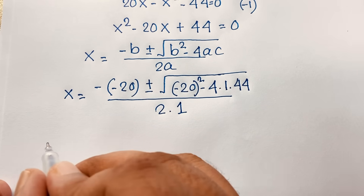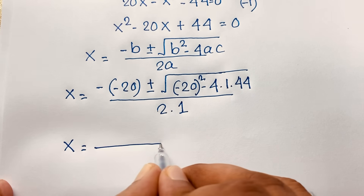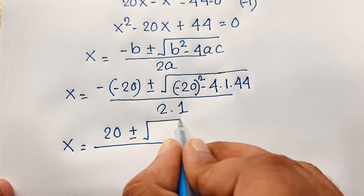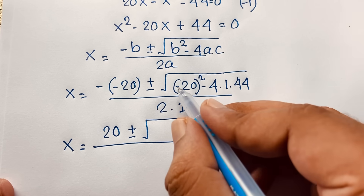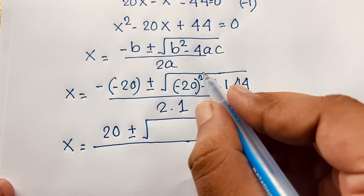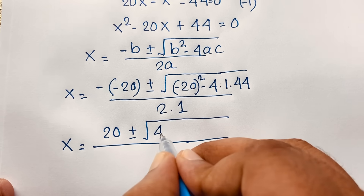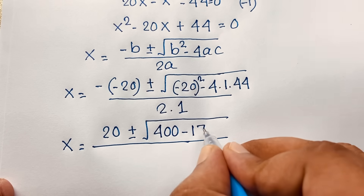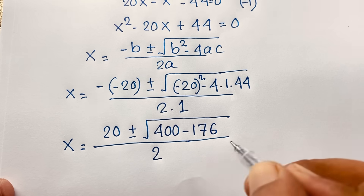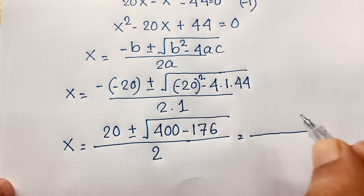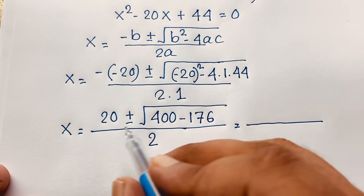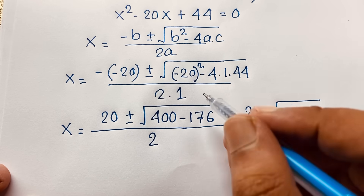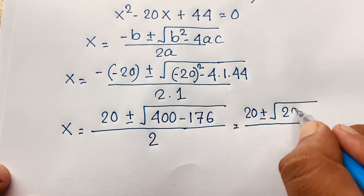So x equals 20 plus or minus square root of (20 squared minus 4 times 44), over 2. Since the exponent is even, 20 squared is always positive, giving 400. Then 4 times 44 is 176, and 2 times 1 is 2. Evaluating: 20 plus or minus square root of (400 minus 176), which equals square root of 224, over 2.